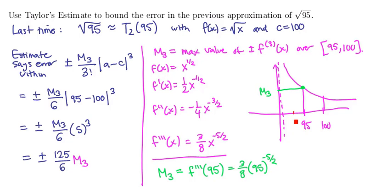However, we can kind of overestimate this a little bit. Notice that 81, at 81, the third derivative is higher. And so our m3 is smaller than 3 eighths times 81 to the minus 5 halves power.